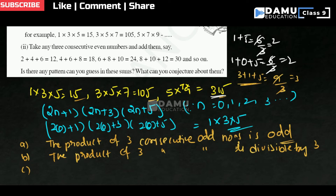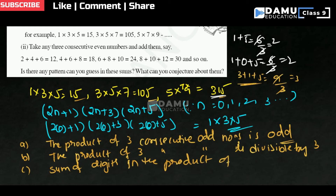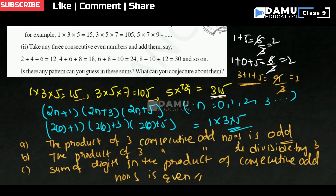Next conjecture: the sum of all the digits present in the product of 3 consecutive odd numbers is even. For example, 1+5=6 and 3+1+5=9... let us verify: for 15, 1 plus 5 equals 6, which is even. So the sum of all the digits present in the product of 3 consecutive odd numbers is even.